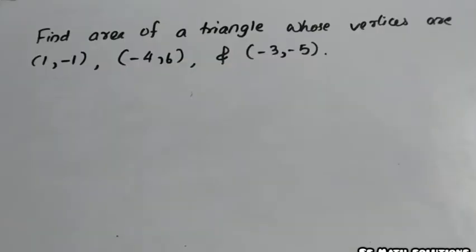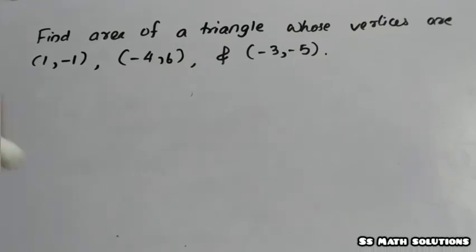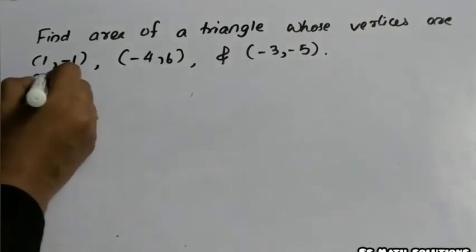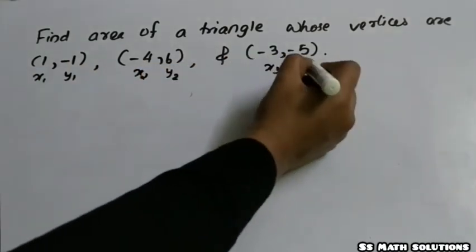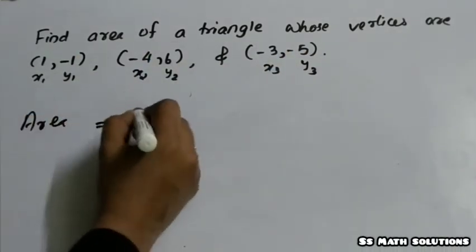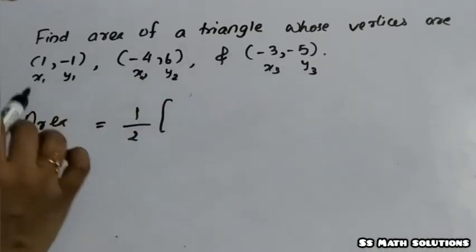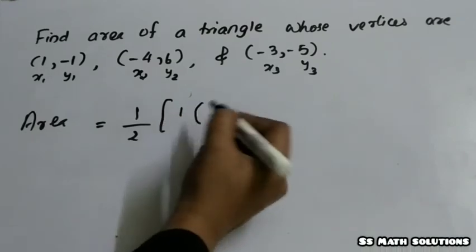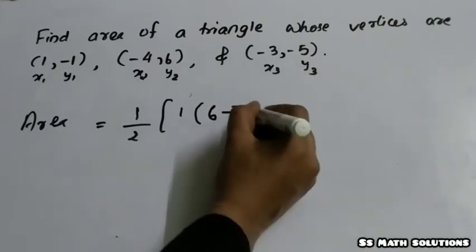Let's do some problems. The question is: Find the area of a triangle whose vertices are (1, −1), (−4, 6), and (−3, −5). We can denote this as vertex 1: X1=1, Y1=−1; vertex 2: X2=−4, Y2=6; and vertex 3: X3=−3, Y3=−5. Using the formula, area equals 1/2 into 1 times (6 minus Y3)...